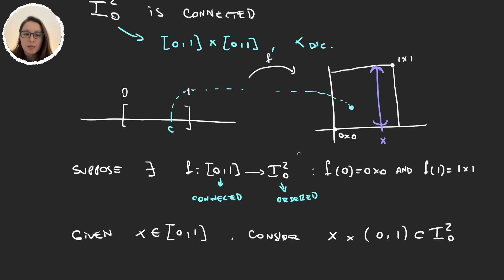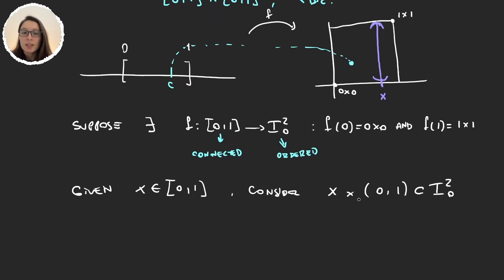And so what happens is given that our function is continuous this is an open set because it's the typical open interval with the dictionary order, then the preimage of this set is open in the interval [0,1].